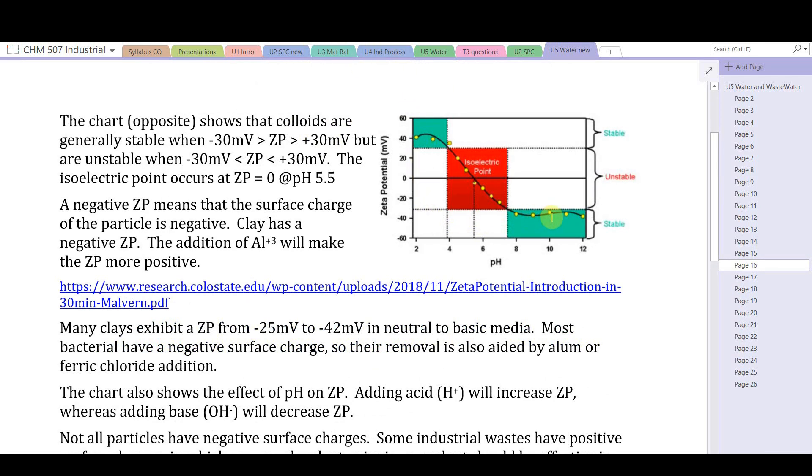The chart on the right here shows the stability of a suspension versus zeta potential and pH. When the zeta potential is large negative (like -30 or lower) or high positive (greater than +30), the suspension is stable, meaning the particles will not agglomerate, coagulate, and settle. But when the zeta potential is reduced in magnitude to less than +30 or greater than -30, the suspension is destabilized and the particles will agglomerate. Notice that the zeta potential is zero at pH 5.5 in this diagram - this theoretically would have the best settling characteristics at this point.